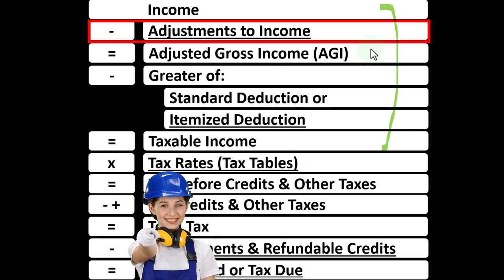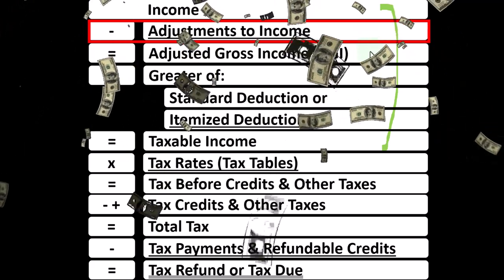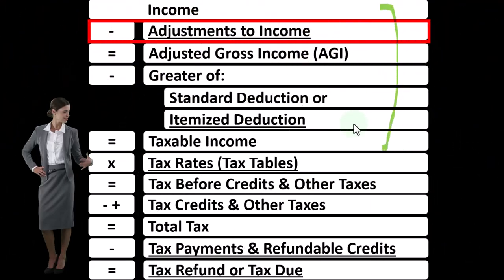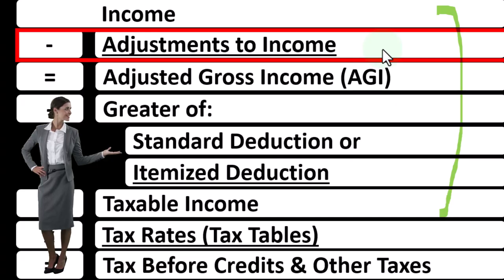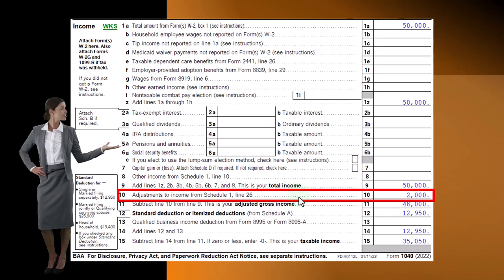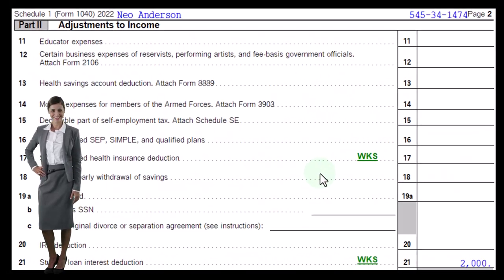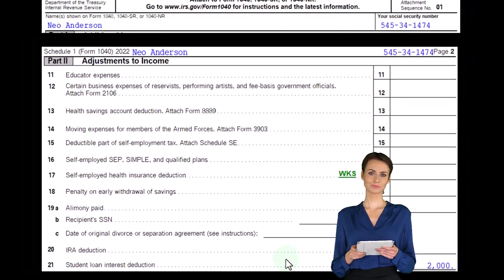The AGI is often used to calculate phase-outs on deductions and credits as income levels rise. Note that adjustments to income don't have the same hurdle as itemized deductions — you don't have to clear a threshold before they benefit you. So if you qualify for an above-the-line deduction, you can take it even if you don't clear the standard deduction hurdle. On line 10, adjustments to income come from Schedule 1, and we're looking at the student loan interest deduction.